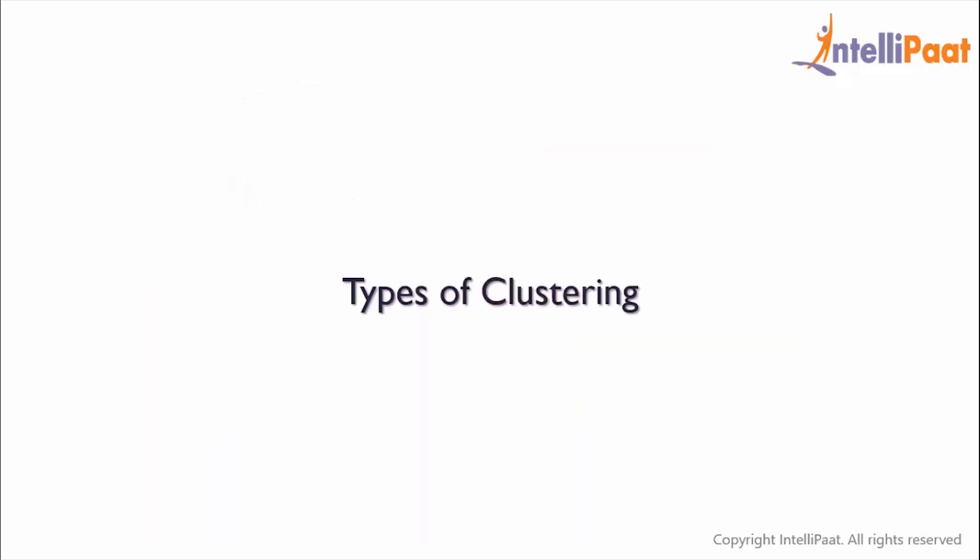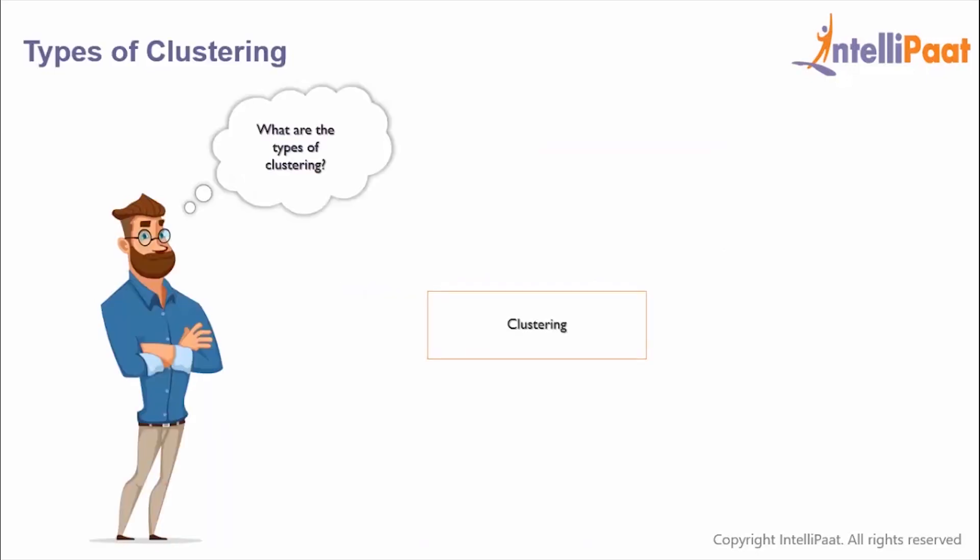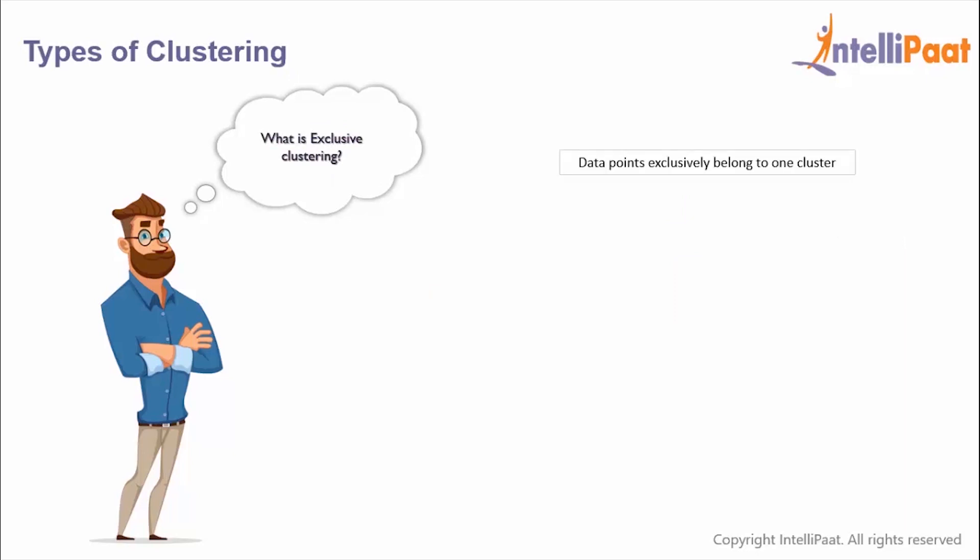Now we'll discuss the different types of clustering. There are three main types of clustering techniques: exclusive clustering, overlapping clustering, and hierarchical clustering. Exclusive clustering is a hard clustering technique in which data points exclusively belong to just one cluster. You can see here that all the orange triangles belong to one group and all the purple triangles belong to another group, and both these clusters are entirely different from each other.